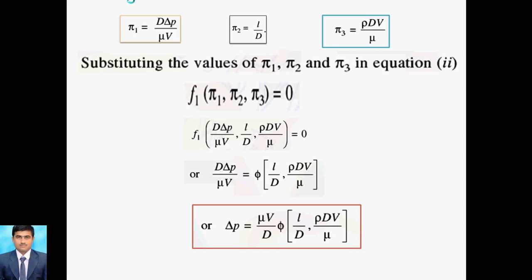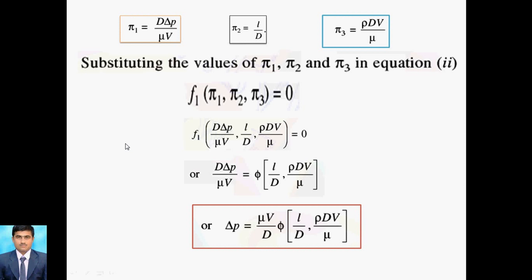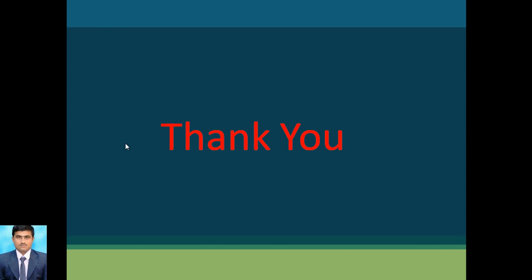So already we discussed this in the Buckingham Pi method format. The Pi method is suitable when two or more variables are present — it is more advantageous in that point of view. Thank you.